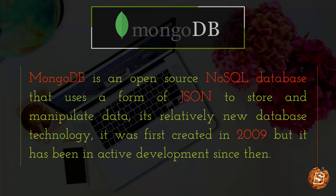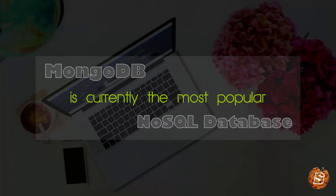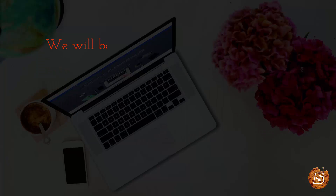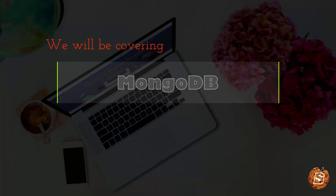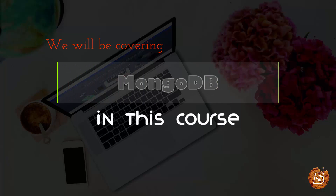MongoDB is an open source NoSQL database that uses a form of JSON to store and manipulate data. It's a relatively new database technology — it was first created in 2009, but it has been in active development since then. MongoDB is currently the most popular NoSQL database, and we will be covering MongoDB in detail in this course.